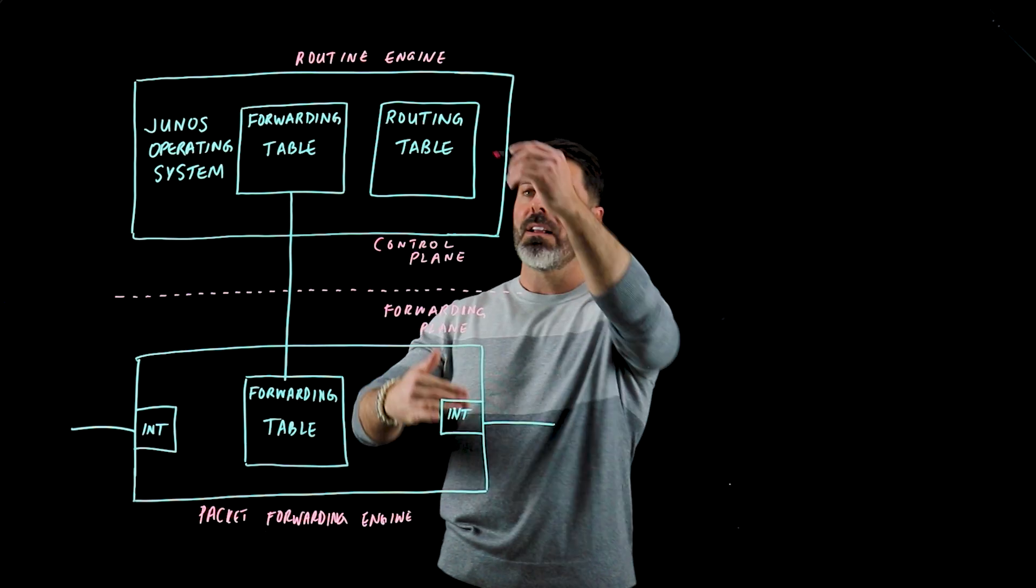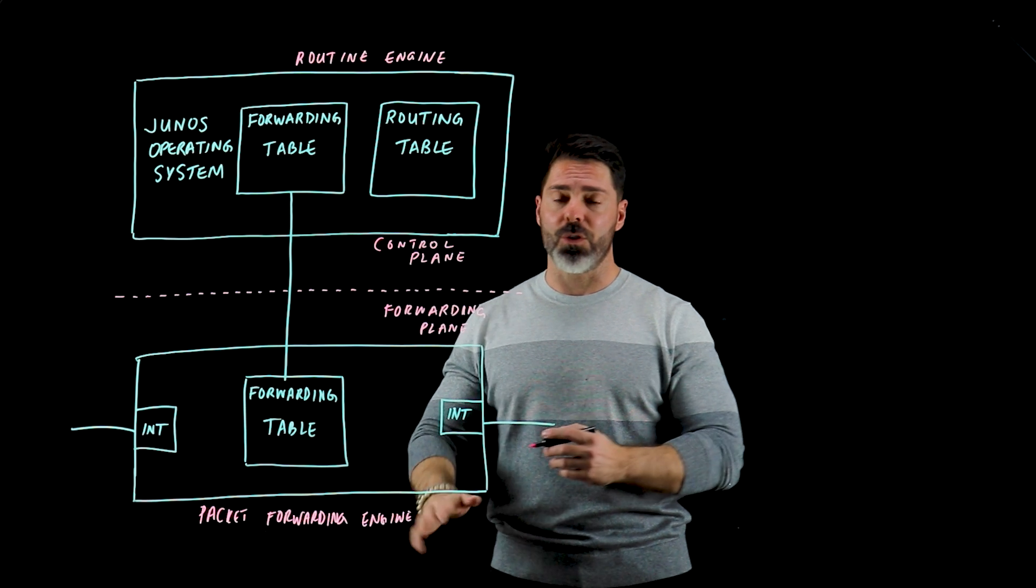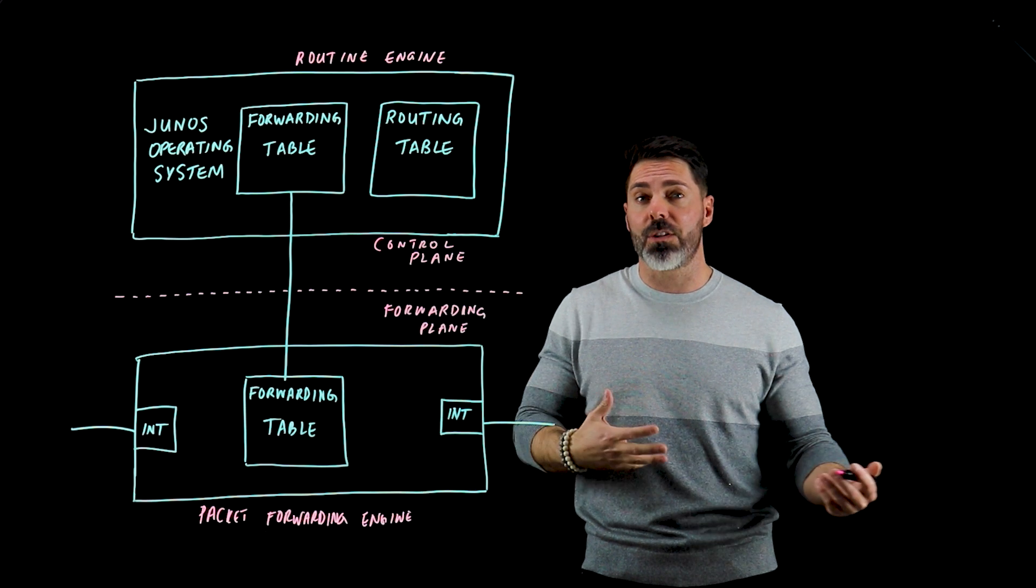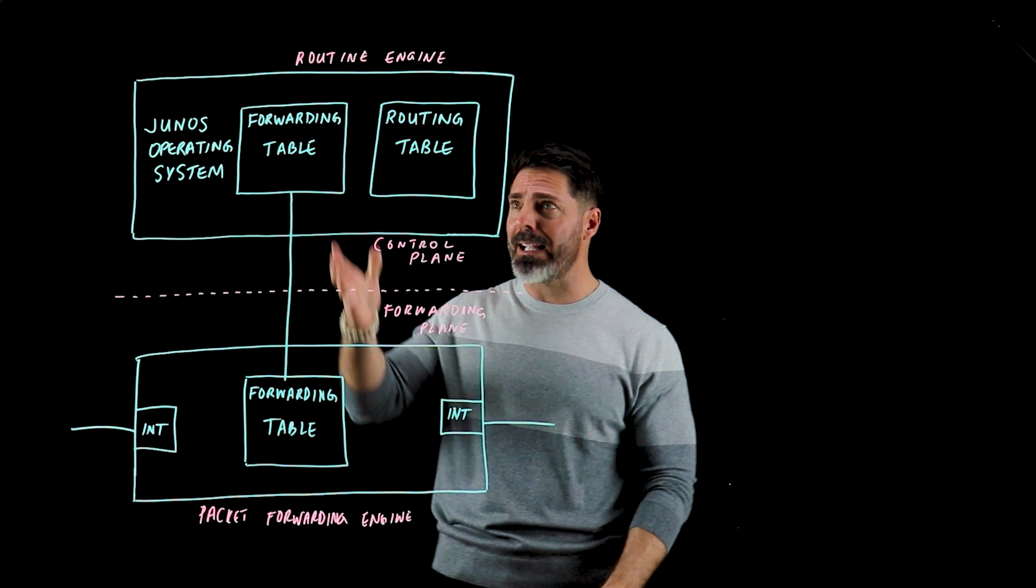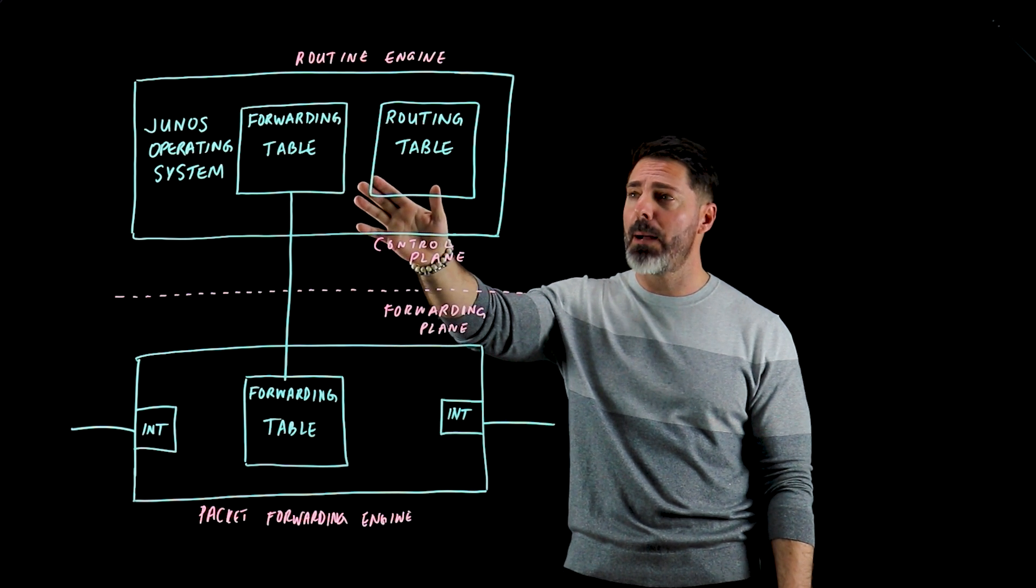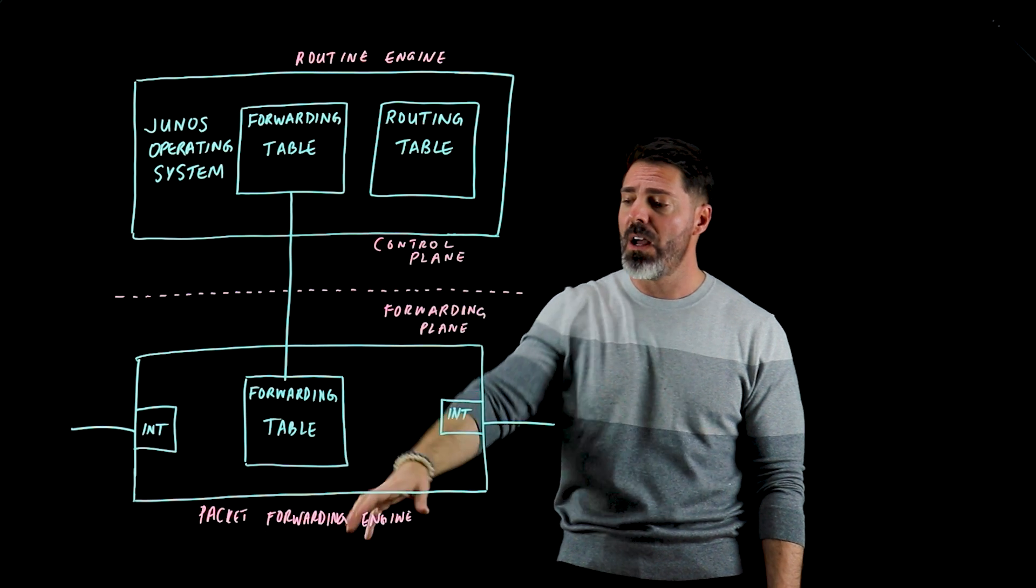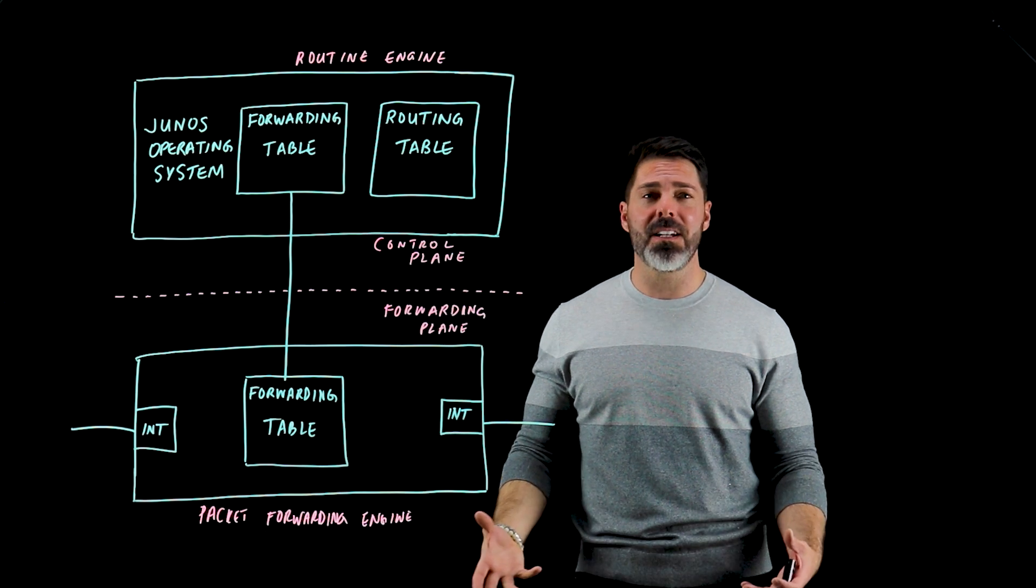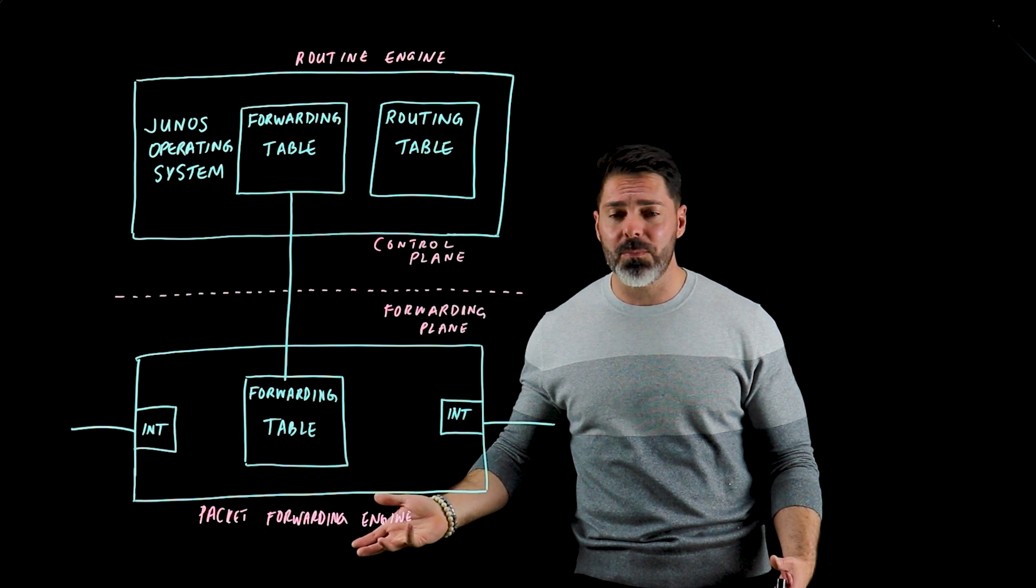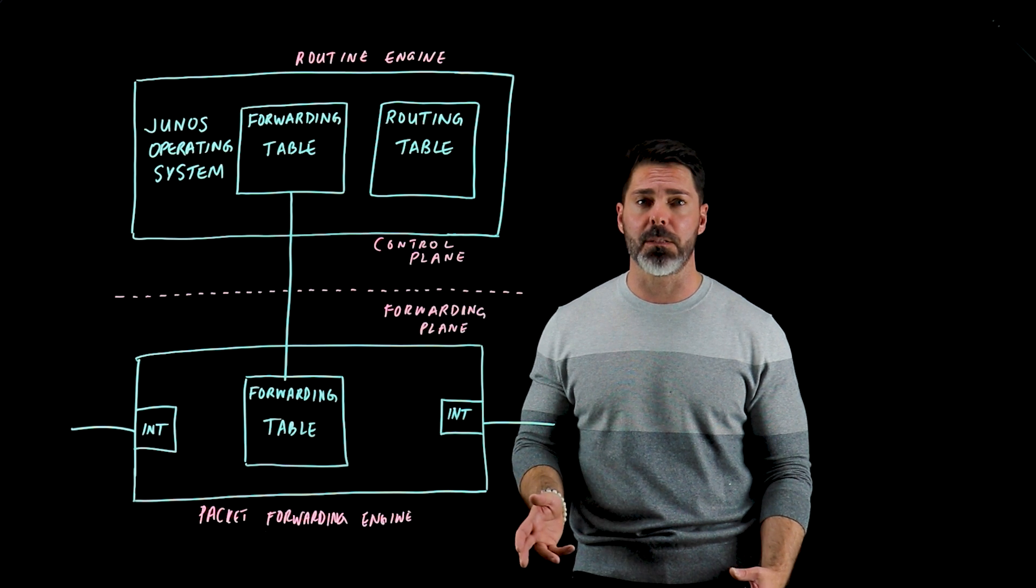But essentially this architecture where we separate routing engine and packet forwarding engine, or what we would say control plane versus forwarding plane, is really the most fundamental concept to master. Again, the routing engine is the brains of the operation responsible for maintaining all of our routing tables and so on and so forth. The packet forwarding engine is really just an unintelligent piece of hardware and its main responsibility is to simply forward packets and to forward them as quickly as possible.